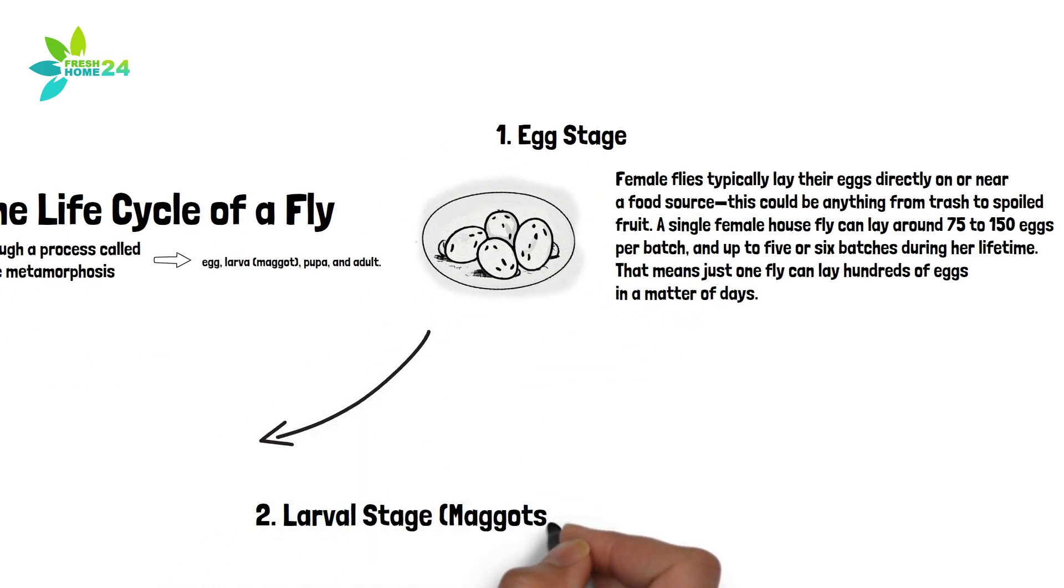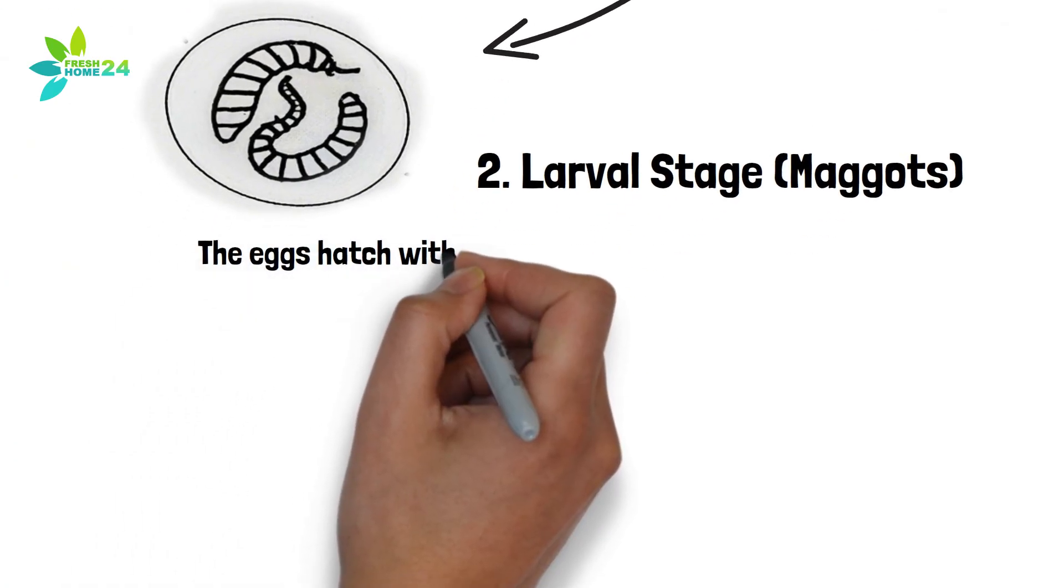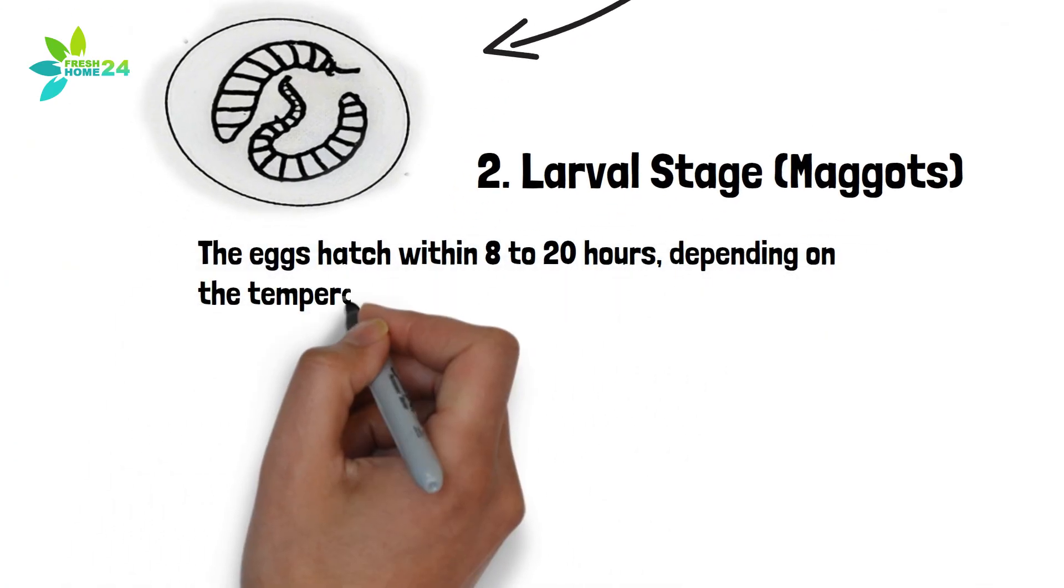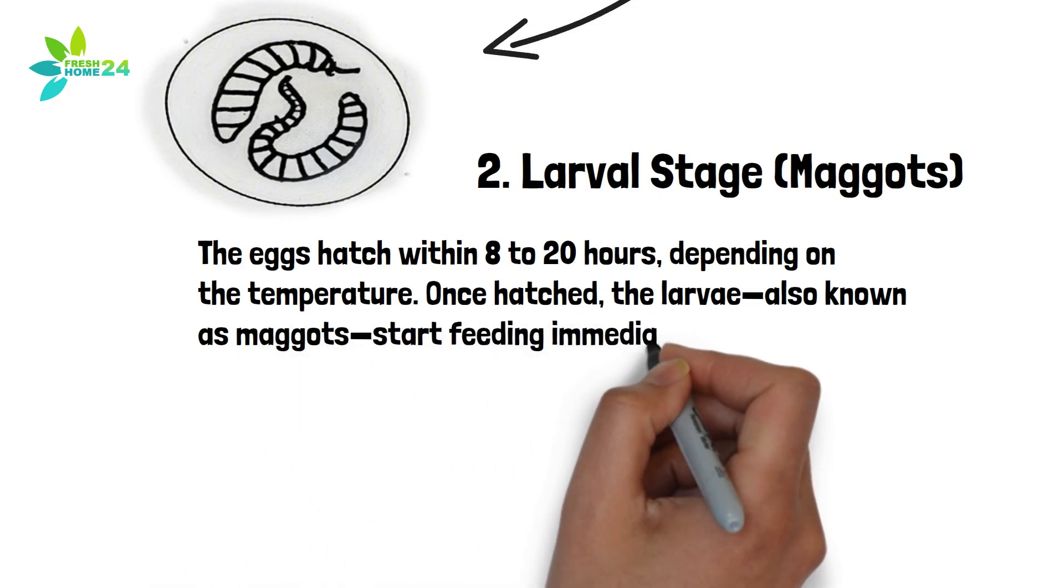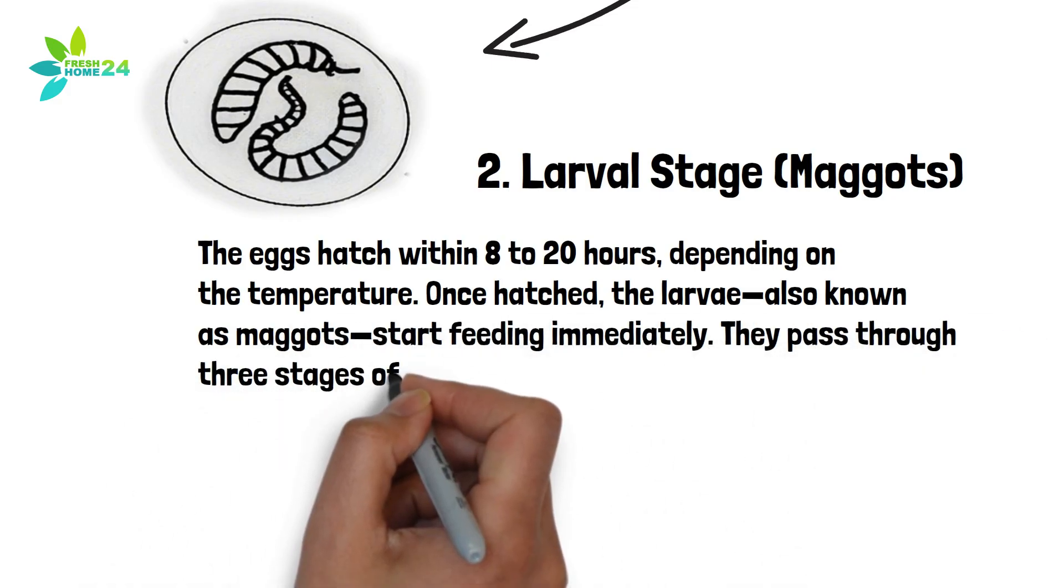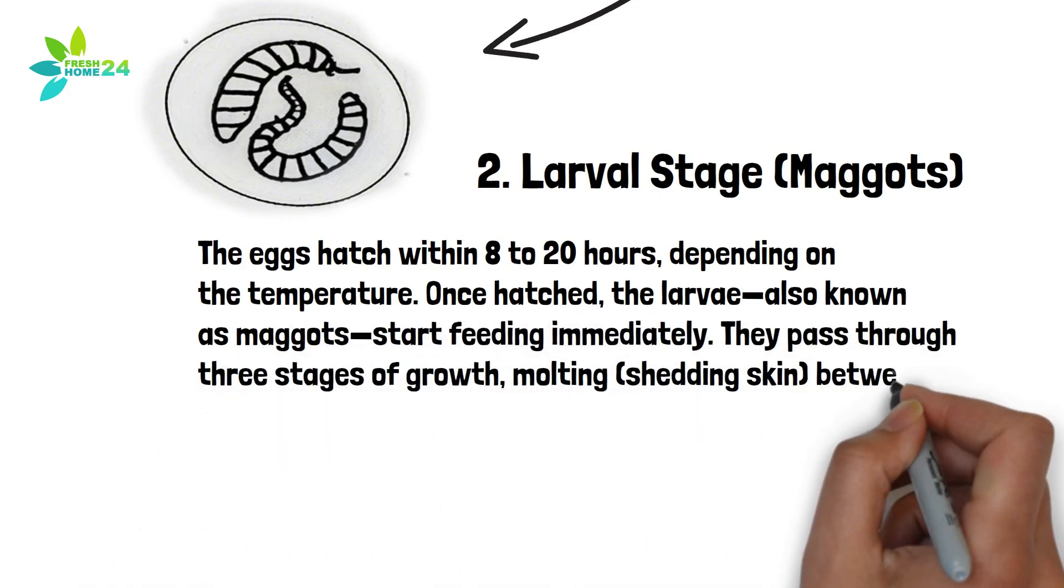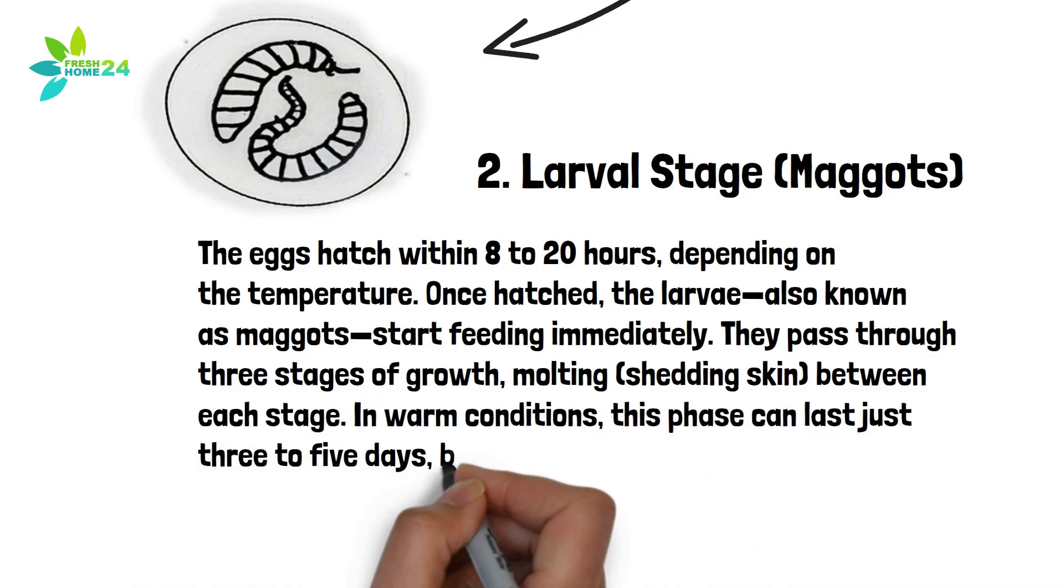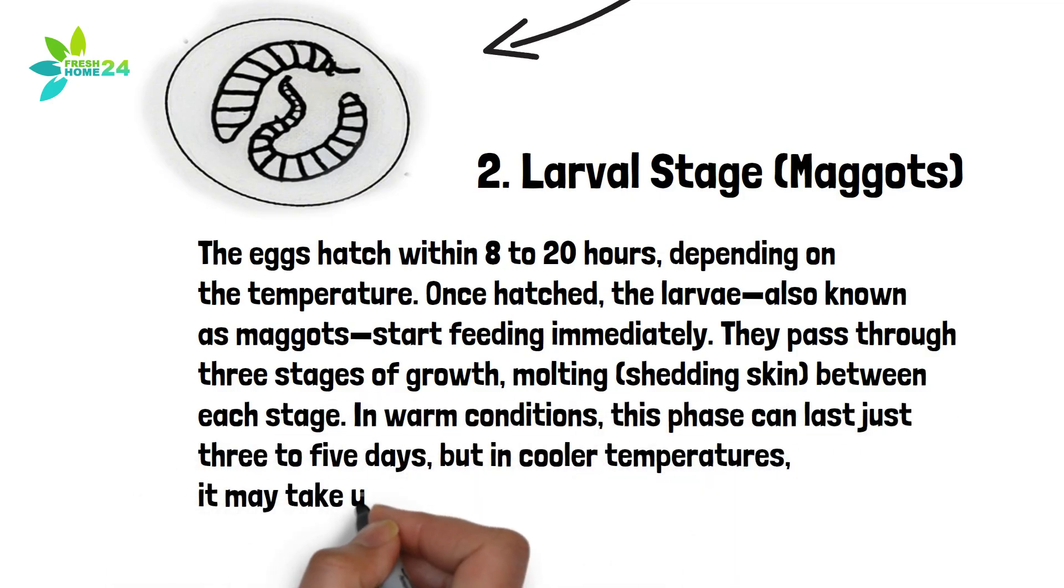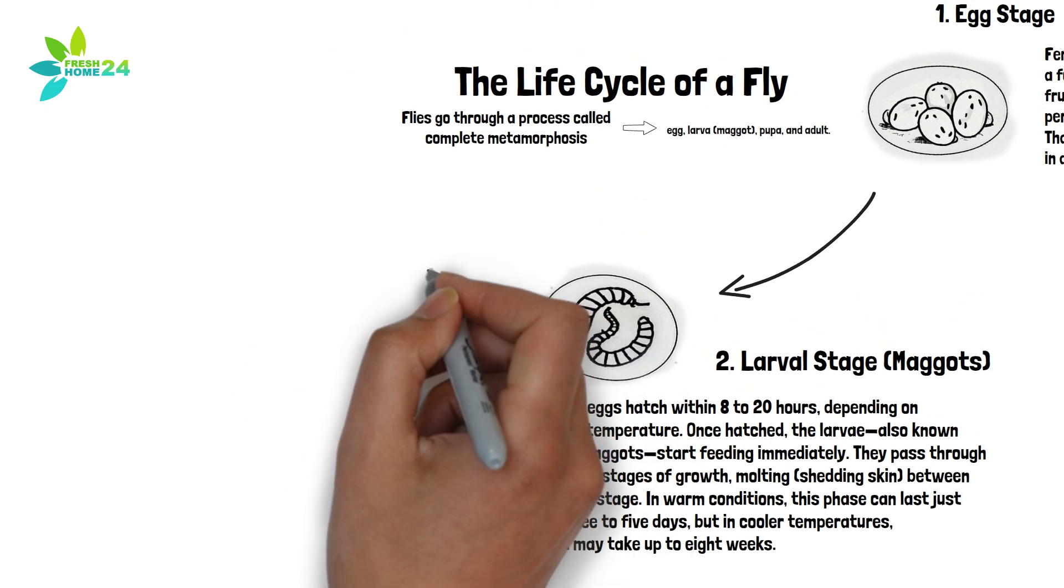2. Larval Stage (Maggots). The eggs hatch within 8 to 20 hours, depending on the temperature. Once hatched, the larvae, also known as maggots, start feeding immediately. They pass through three stages of growth, molting, shedding skin between each stage. In warm conditions, this phase can last just 3 to 5 days, but in cooler temperatures, it may take up to 8 weeks.